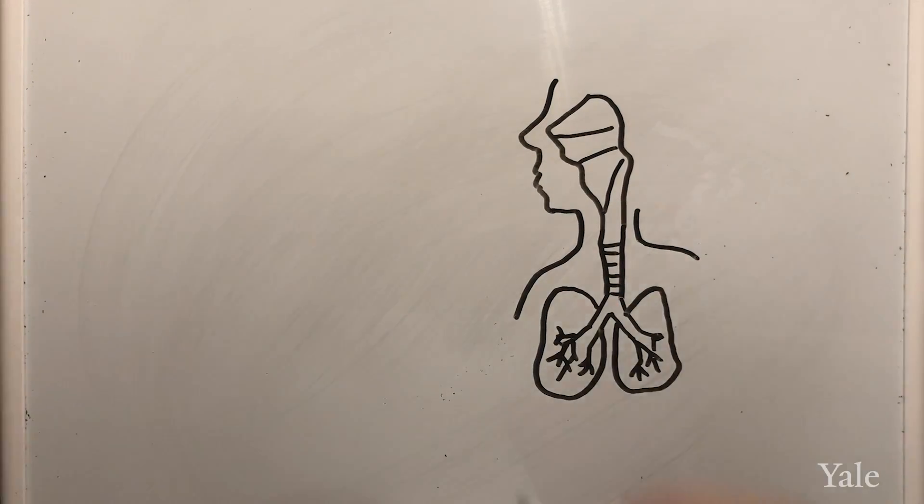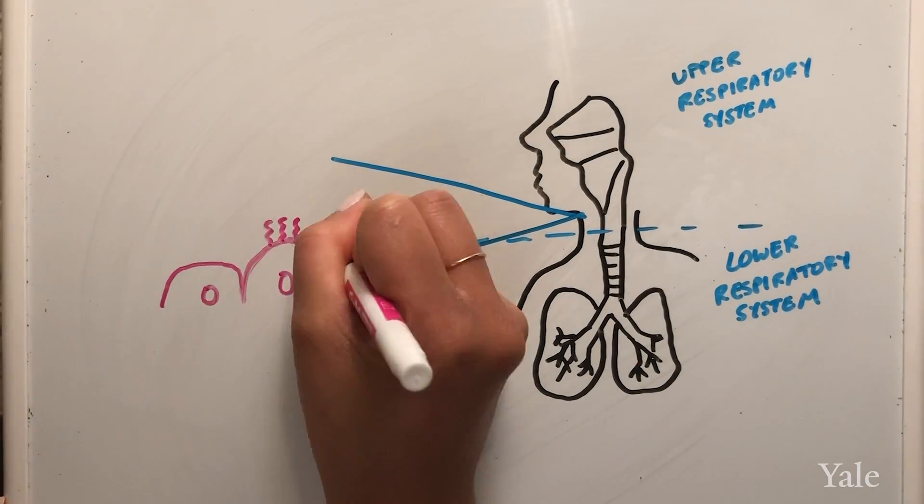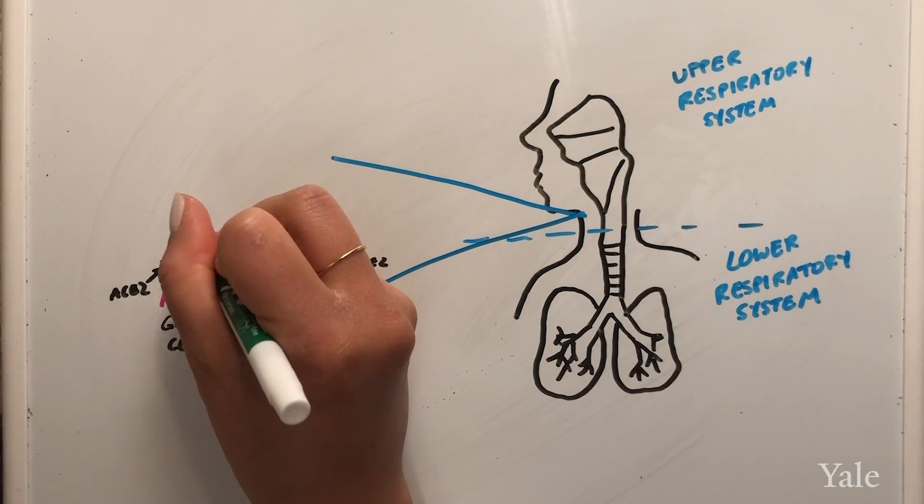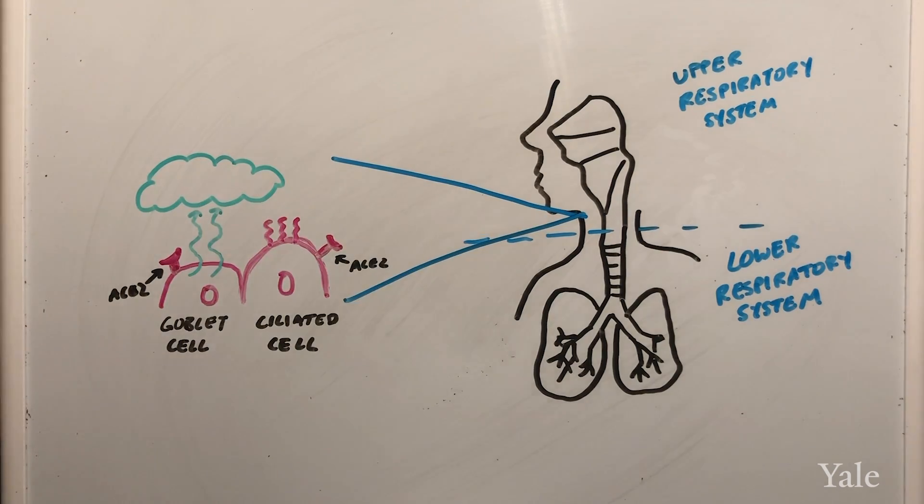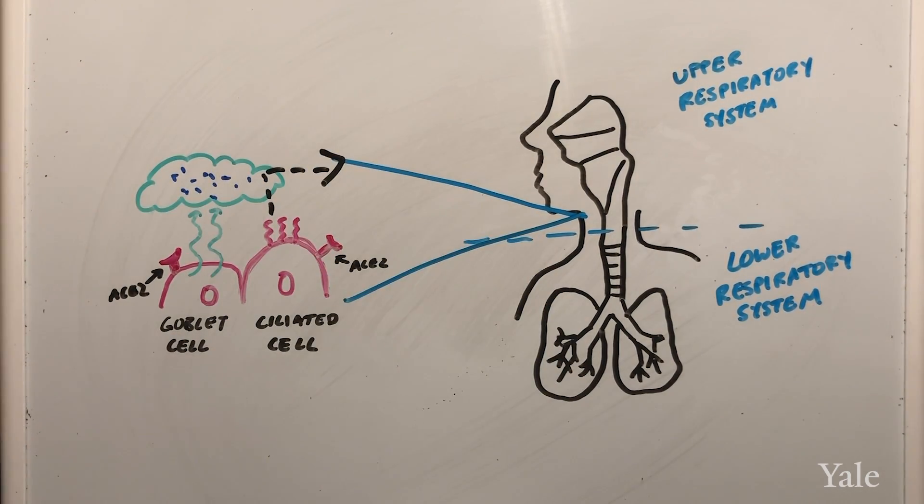ACE2 is found especially on cells that line the upper respiratory tract called goblet cells and ciliated cells. These cells are the frontline defenders. Goblet cells produce mucus which traps bacteria and pathogens. Ciliated cells then sweep the debris and mucus out, clearing away the unwanted particles.